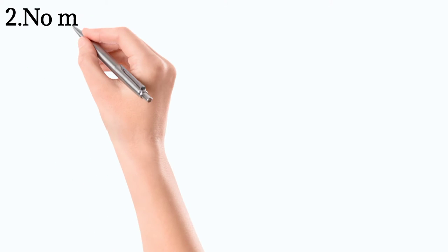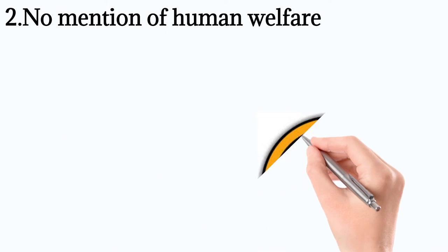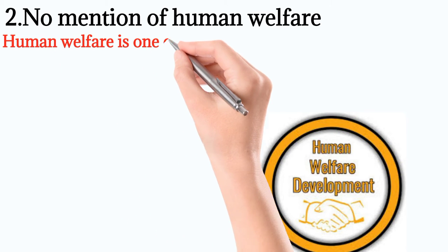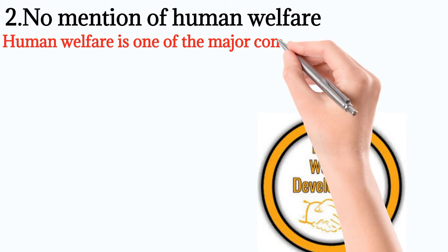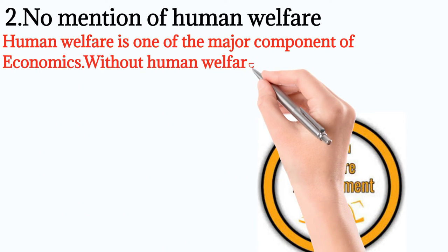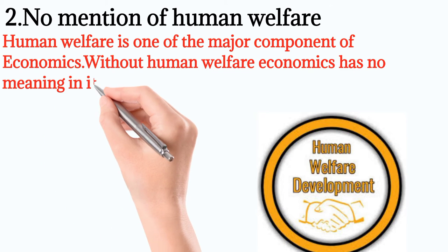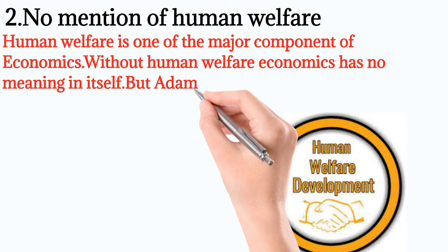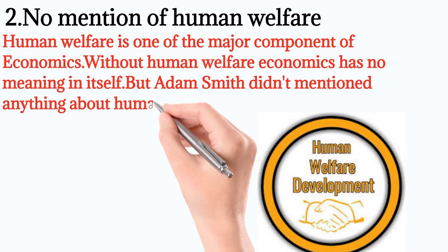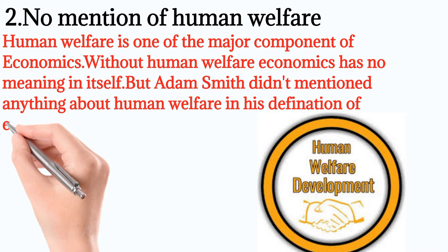Number 2: No mention of human welfare. Human welfare is one of the major components of economics. Without human welfare, economics has no meaning in itself. But Adam Smith did not mention anything about human welfare in his definition of economics.